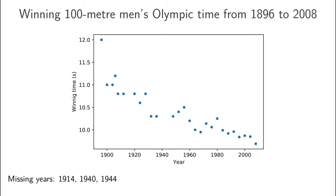We will try to answer this question using simple linear regression. In this case, the input feature x will be the year in which the race took place, and the output target y will be the winning time for that year. As a spoiler, simple linear regression will basically try to fit a straight line through this data. We will first develop the mathematics before returning to the example and seeing how good a fit our model is.